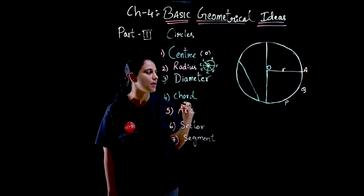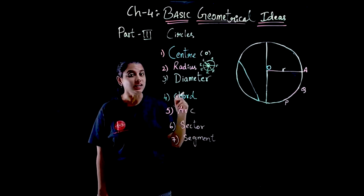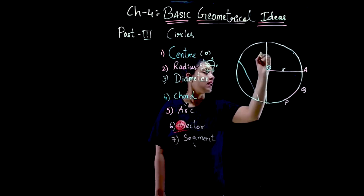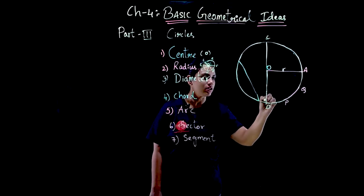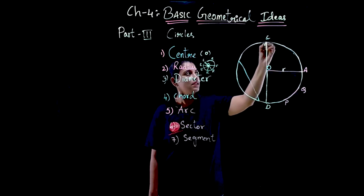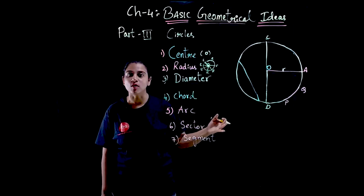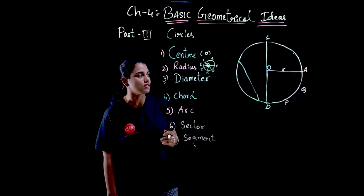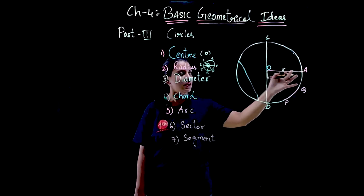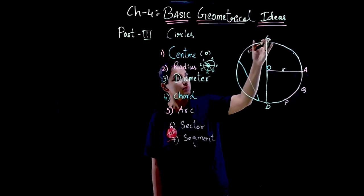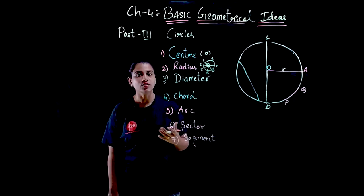Now let us see what a diameter is. A diameter is any line that passes from one point on the circle to another point on the same circle, but it must pass through the center. Suppose I have taken a line CD — I have drawn a line on the circle passing through center O, from one point to another point on the circle. Any line that passes through the center from one point to the other is a diameter. Notice that the radius is half of the diameter, because the radius passes from the center to some point on the circle.